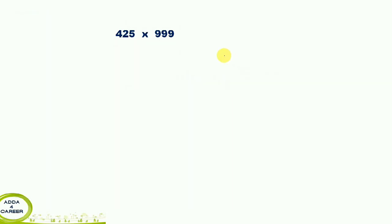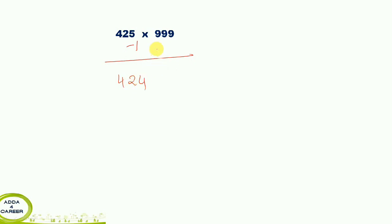Next question: this uses three 9s — 999 — so it is a triple digit. The condition is the same: subtract 1. We have 424, so 424 minus 1 is 423. Now we find the complement of 424 from 999: 9 minus 4 is 5, 9 minus 2 is 7, 9 minus 4 is 5.